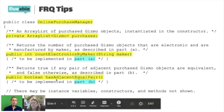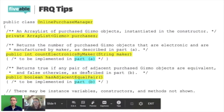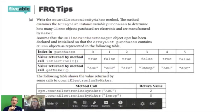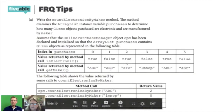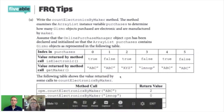The next method is hasAdjacentEqualPairs. 'Adjacent' may not be a word that students are comfortable with, and that's where they start reading the text: 'returns true if any pair of adjacent purchase Gizmos...' — still not quite sure. But finally, after just looking at the code and hopefully not having to read a lot of text, if they look at the tables that College Board usually provides — showing isElectronic true, false, false — they can check whether their understanding of maker, electronics, and all the variables really match up with the input and output produced, including the counts for countElectronicsByMaker.